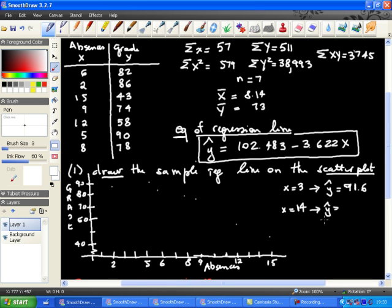And similarly, y hat is going to be 102.483 minus 3.622 multiplied by 14. That will give me a value of 51.8. Now, representing these points, I represent them in red, just to show it's the ones from the sample regression line.